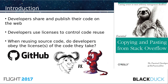Developers share and publish their code on the web. People who share their code expect it to be reused, so not only do they share their code, people download code off the web and use them in their products, especially open source products. And developers who share their code typically use licenses to control the reuse. So one question is: when we're using source code, do developers obey the licenses of the code they take?